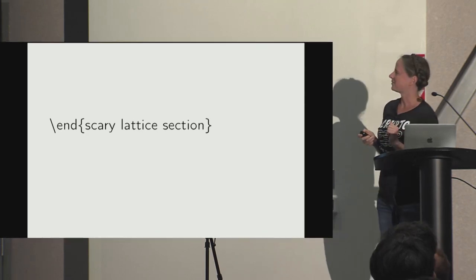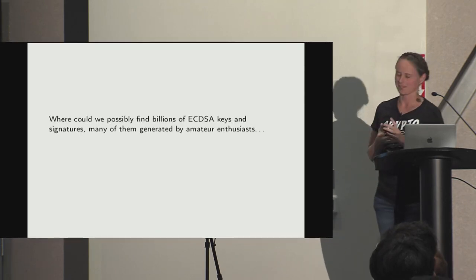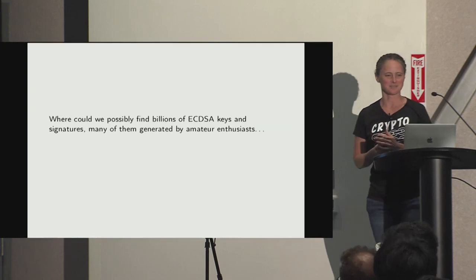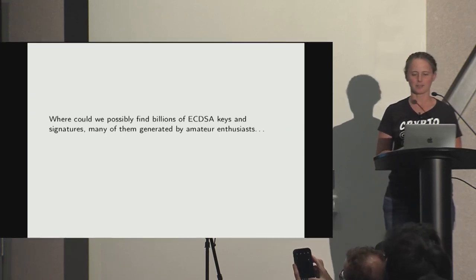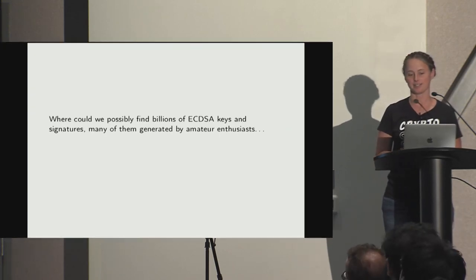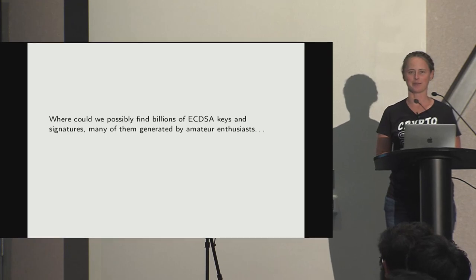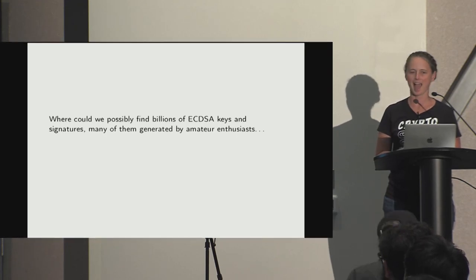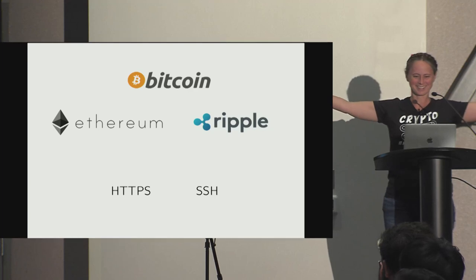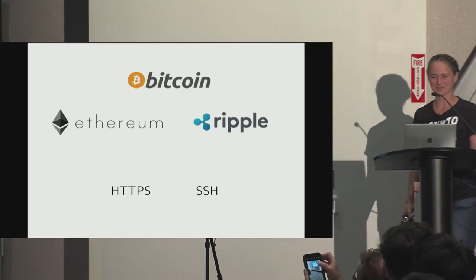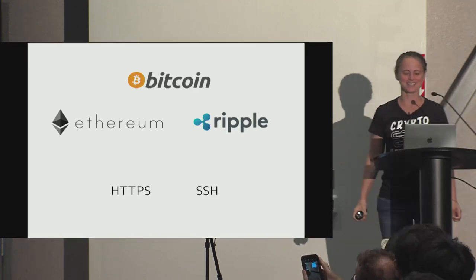That's the end of the scary lattice section — we have a magic box: dump a bunch of signatures in, and it spits out the private key. Now we start breaking stuff. Where can we find billions of ECDSA keys and signatures, many generated by amateur enthusiasts? Cryptocurrencies.